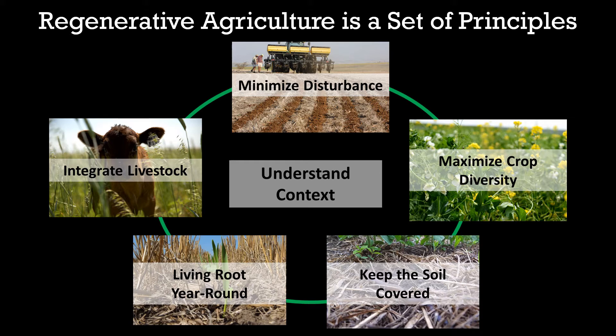The next principle is to maximize crop diversity. Maximizing diversity is a way that farmers can naturally defend themselves against pests, weeds, and diseases. And growing a diversity of plants helps to feed the soil a diverse diet, which improves soil health.